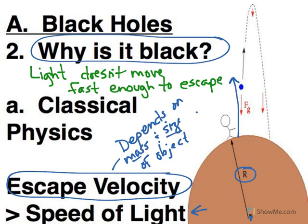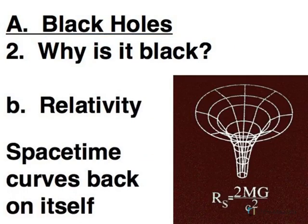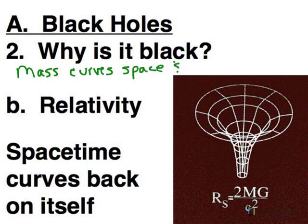So that's one way of picturing what's happening in a black hole. The other way comes from Einstein and relativity. Einstein says that mass curves space and time, which he combined together to call space-time. And a black hole, in this way of thinking about it, essentially curves space back on itself.